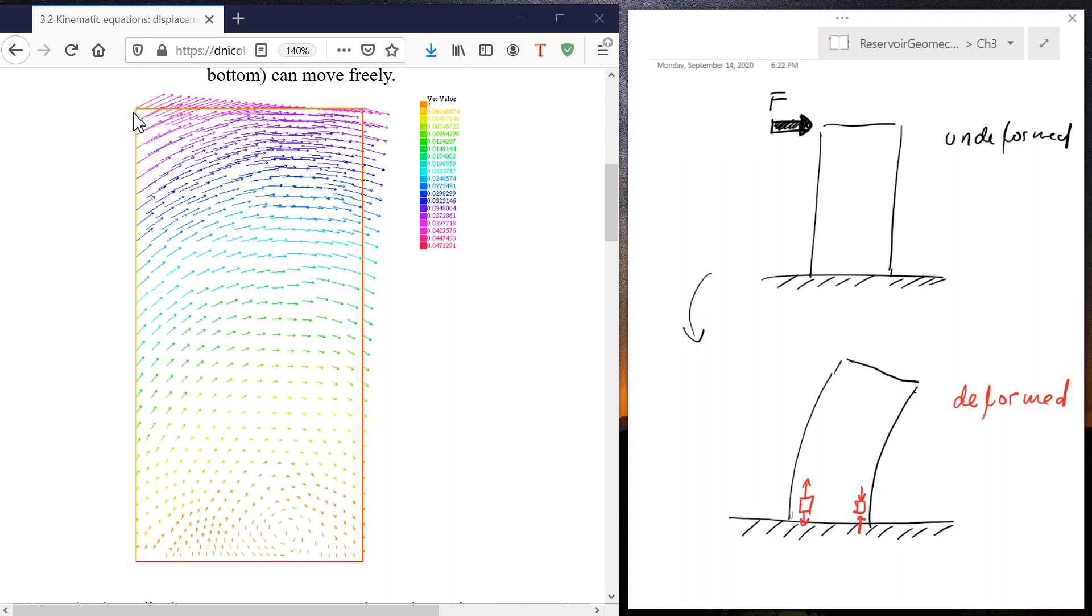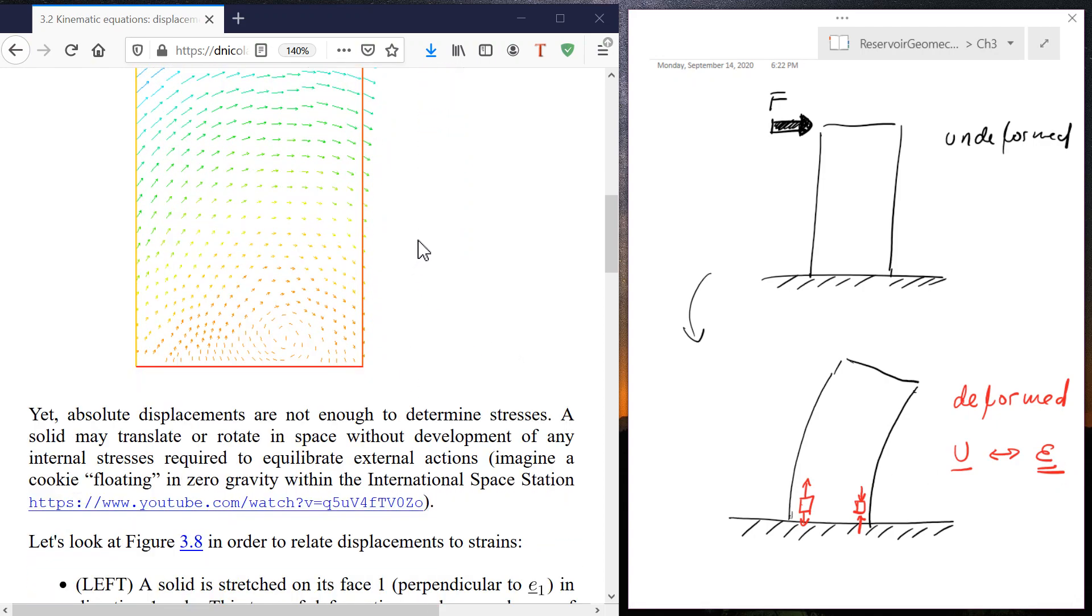For example, here at the top left corner, we see that this corner in the undeformed configuration moves to this point over here. And the top right corner moves right and down opposite to the top left corner that moves right and up. Now, how we relate the displacements to strains is what the kinematic equations are going to do. So our objective then is going to be here to link displacements, which are vectors, to strains, which we're going to see is a tensor similar to the stress tensor. But let's start with an easy example and an easy explanation.